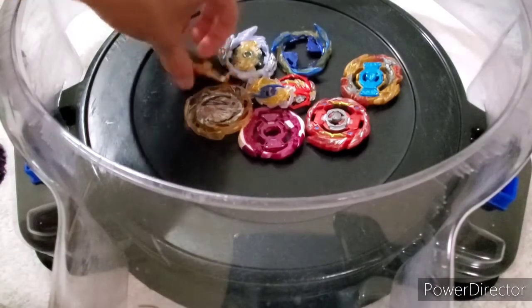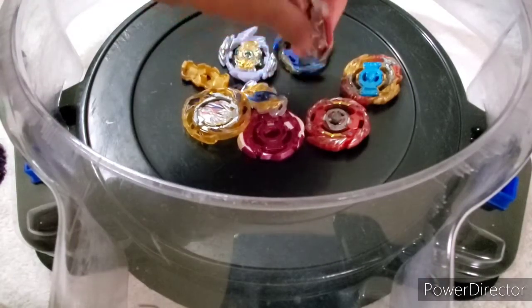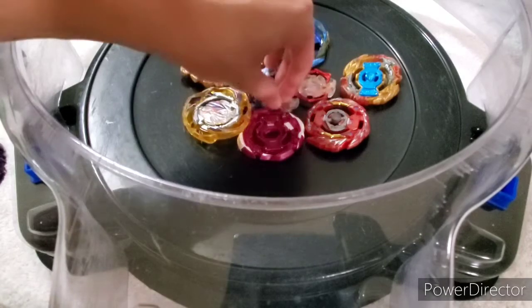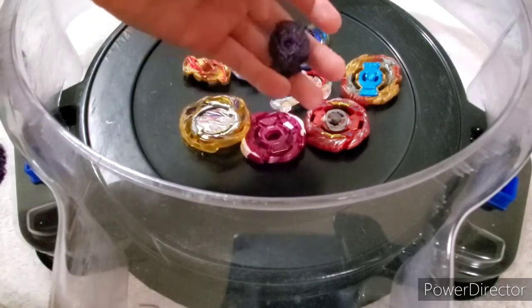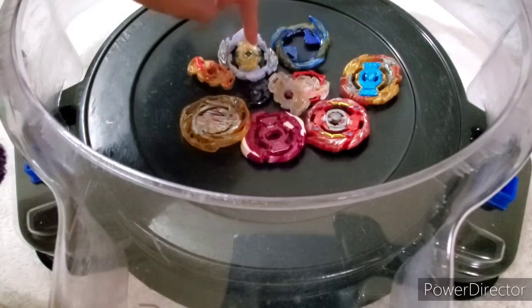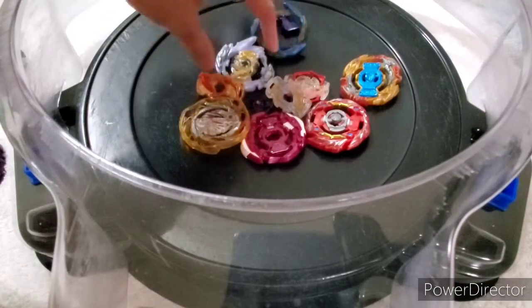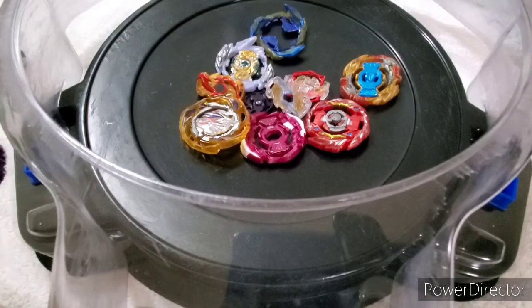There's also some chips. We have Diabolos number one, we have Spriggan, we have Longinus for GT, and for the Sparking series, we have a Lucifer chip and we have a Valkyrie chip right there on Rage.